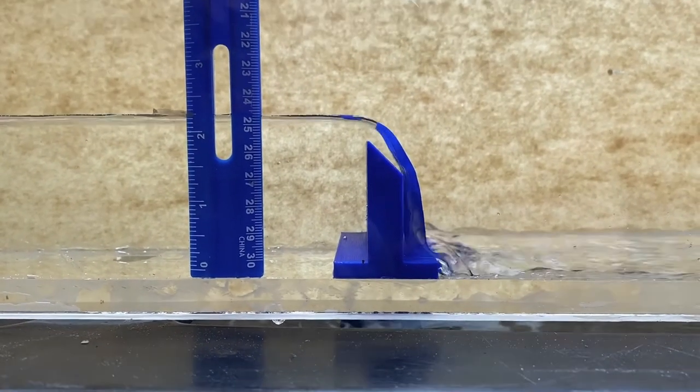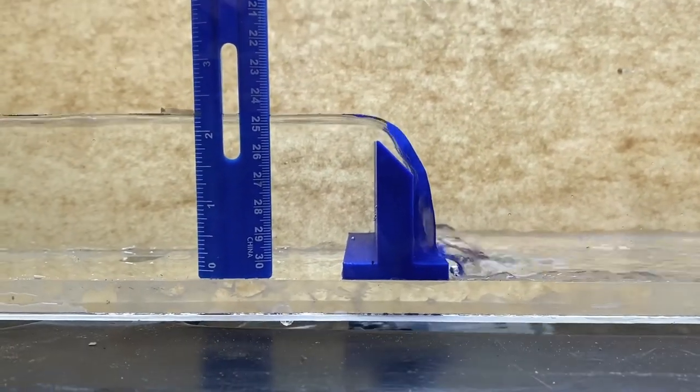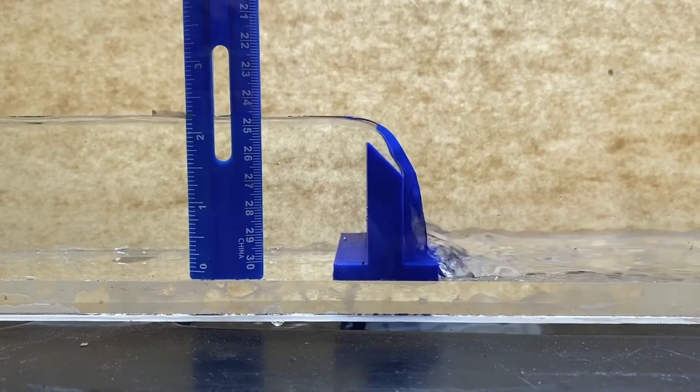The first test we performed was with a basic sharp-crested weir 4 inches in length perpendicular to the flow. Notice how the water stays tight against the body of the weir. This is called a clinging nap.